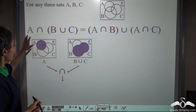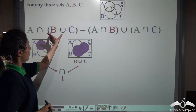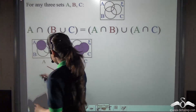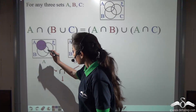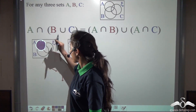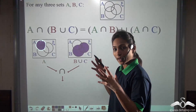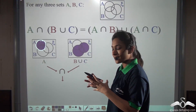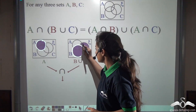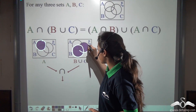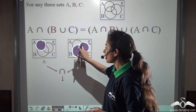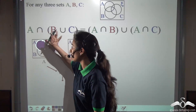Look at it. A intersection with B union C. You can see that A represents this part in the Venn diagram, and B union C means set B and set C written together. We have highlighted this with a new colour. Now we have to intersect both of them.